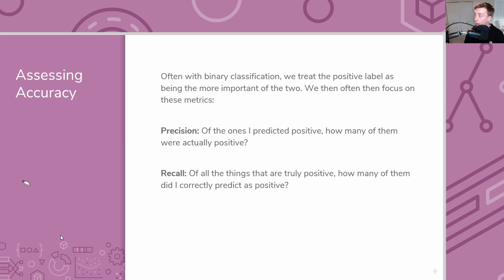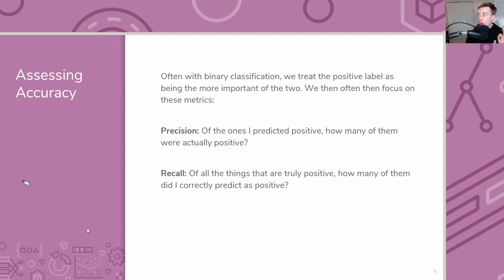Now let's focus on two slightly different accuracy metrics we'll use in our next case study on document retrieval: precision and recall. Every context cares about different types of errors, and in document retrieval we generally focus on these two. Precision is about how accurate your positive predictions are, while recall is about whether you found all the things that actually were positive. They ask slightly different questions and are easy to confuse.